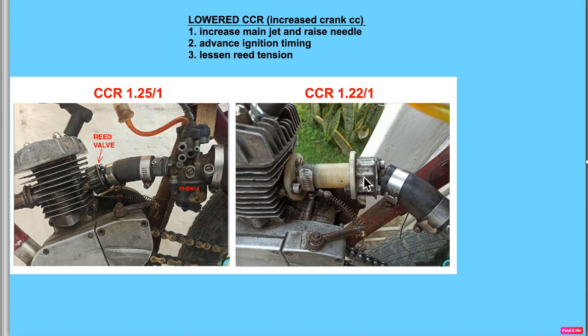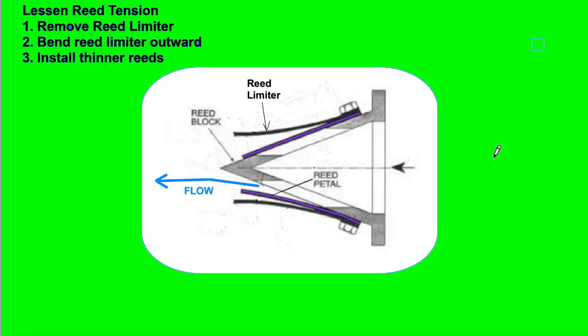With less vacuum, you need less tension on the reed valve. So the options available to you to lessen the reed tension is if there's a reed limiter, remove it or bend it more outward, trying to keep a nice smooth curvature.